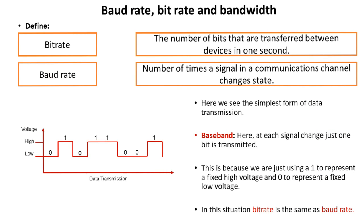Now let's look at bit rate, baud rate, and bandwidth. Bit rate and baud rate can often get confused, so make sure you understand the difference. Bit rate is the number of bits that are transferred between devices in one second, whereas the baud rate is the number of times a signal in a communications channel changes state. Here we see the simplest form of data transmission, called baseband. At each signal change, just one bit is being transmitted — either zero or one — because we're using a high voltage to represent one and a low voltage to represent zero. In this situation, the bit rate is exactly the same as the baud rate.